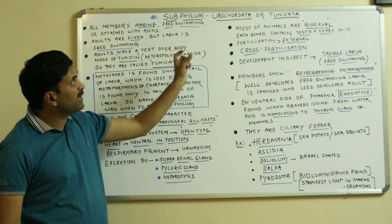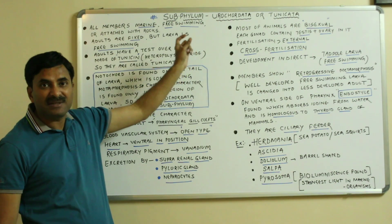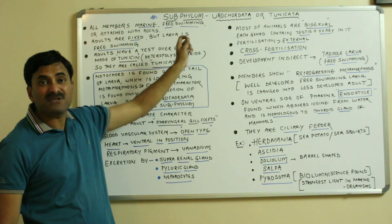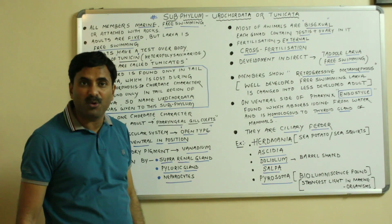Now you must know why they are called Eurochordates. Euro means tail, and in them, in the larval stage, the notochord is found only in the tail region and that's why they are called Eurochordates.